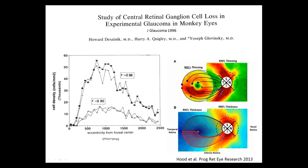The damage occurs preferably in the temporal inferior and temporal superior regions, giving the wedge-like nerve fiber layer defect pointing toward ganglion cells lost mostly on the temporal side of the fovea, either in the lower or upper hemifield. Luckily, most ganglion cells are found in the macula in the area we cover with our macular scan, so we are able to measure ganglion cell loss in the course of the disease.